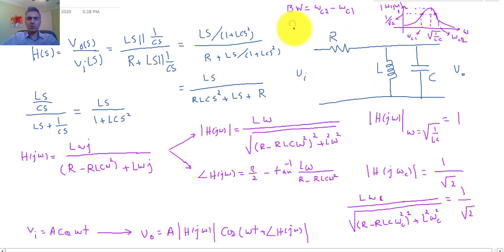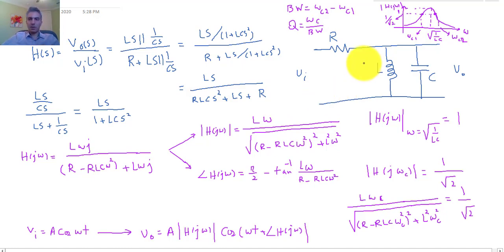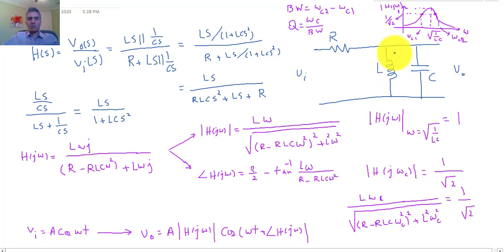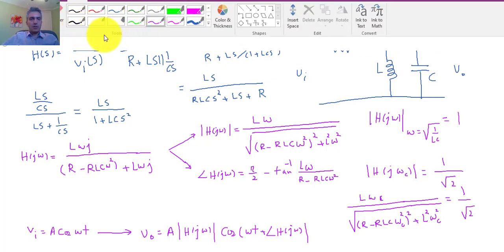If you're asked to calculate the quality factor Q of the filter, that is the center frequency ω₀ divided by the bandwidth. That gives you the quality factor and completes the full analysis of the circuit. When solving these problems, always start with general symbolic RLC values to derive the equations first, and then substitute numerical values — because component values are often in micro and pico units, and working with those small numbers directly is inconvenient. Hopefully this has been helpful, and thank you for your attention.